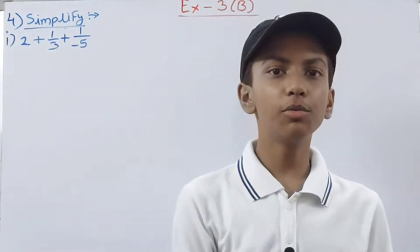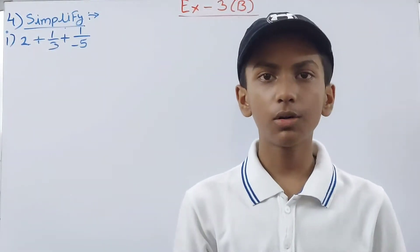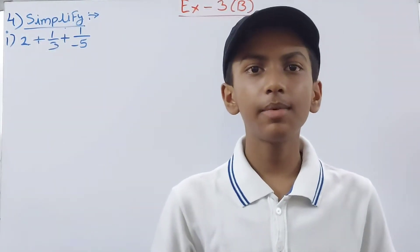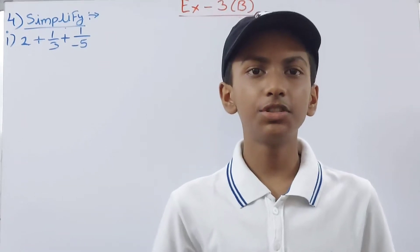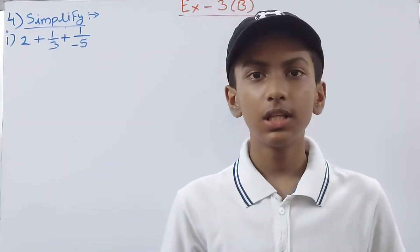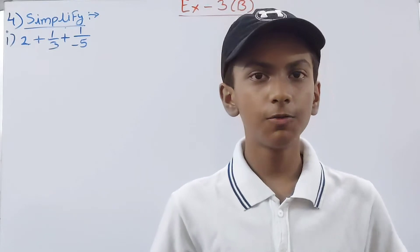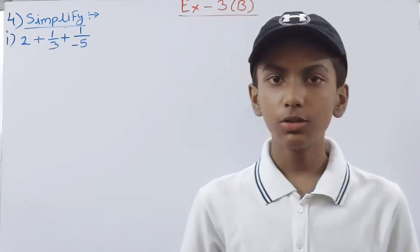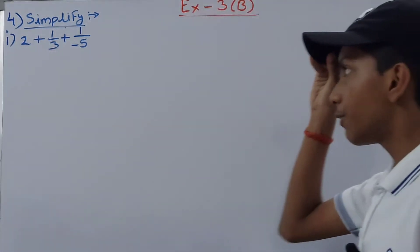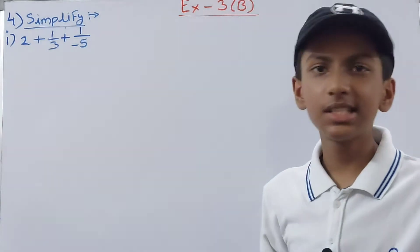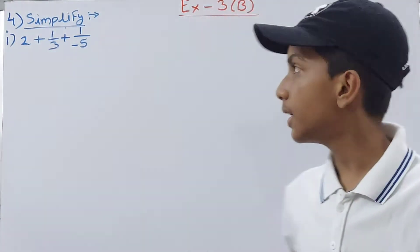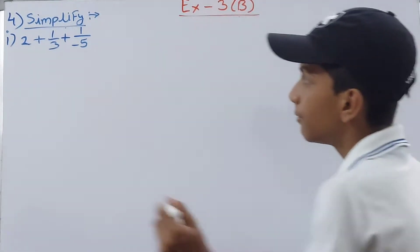Hello friends, welcome back to my YouTube channel. In this video we're going to solve ICSE Mathematics Class 7 Chapter 3 Rational Numbers Exercise 3B Question number 4. We have to simplify these given statements.